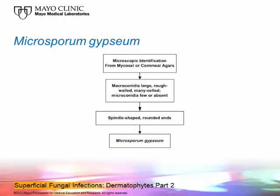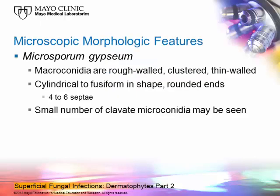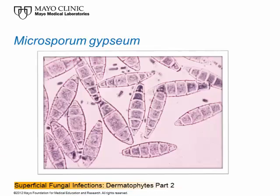The next slide shows a flow chart for identifying Microsporum gypseum, another member of the genus Microsporum. It grows well on mycosel agar and better on cornmeal agar. It produces large, rough-walled macroconidia with many cells, and microconidia occasionally. What distinguishes it from Microsporum canis is the end of the macroconidium — it has a rounded, blunt end rather than a curved beak. They're not spindle-shaped; they don't have a point or curved beak.